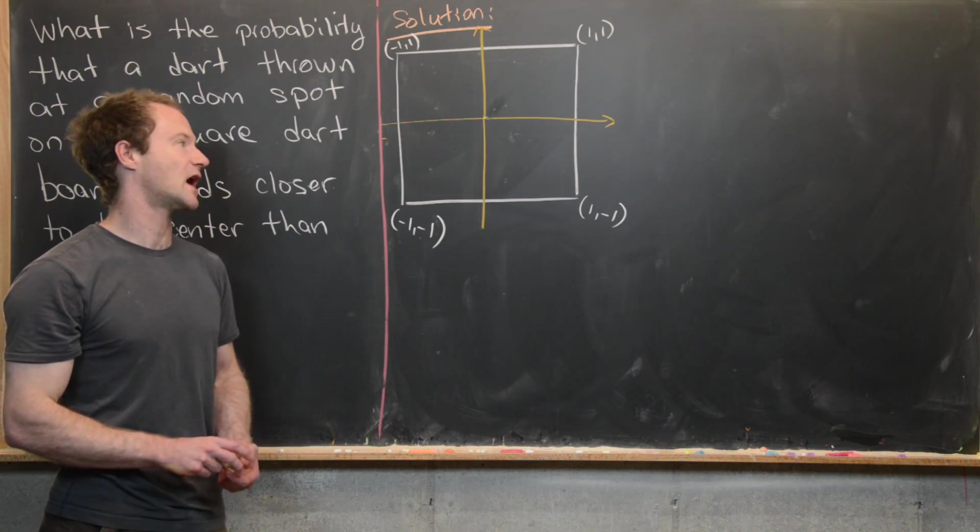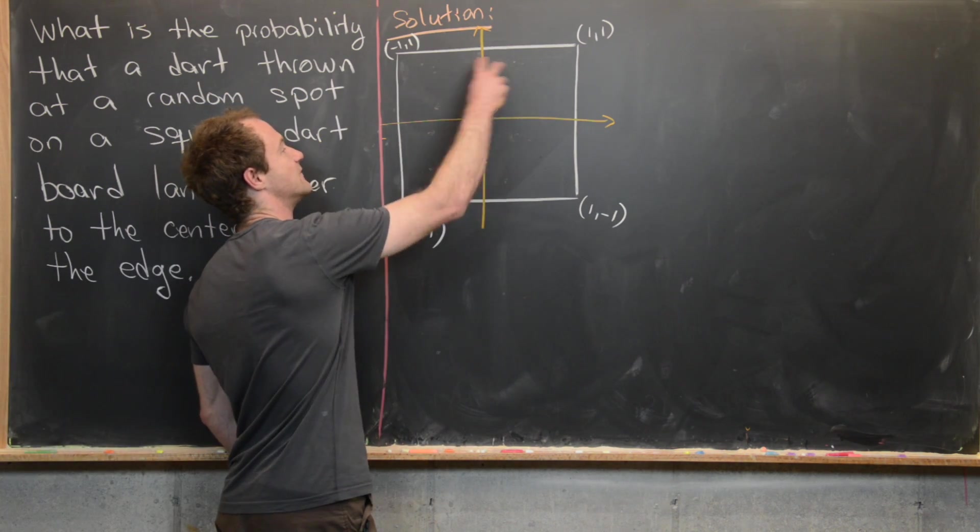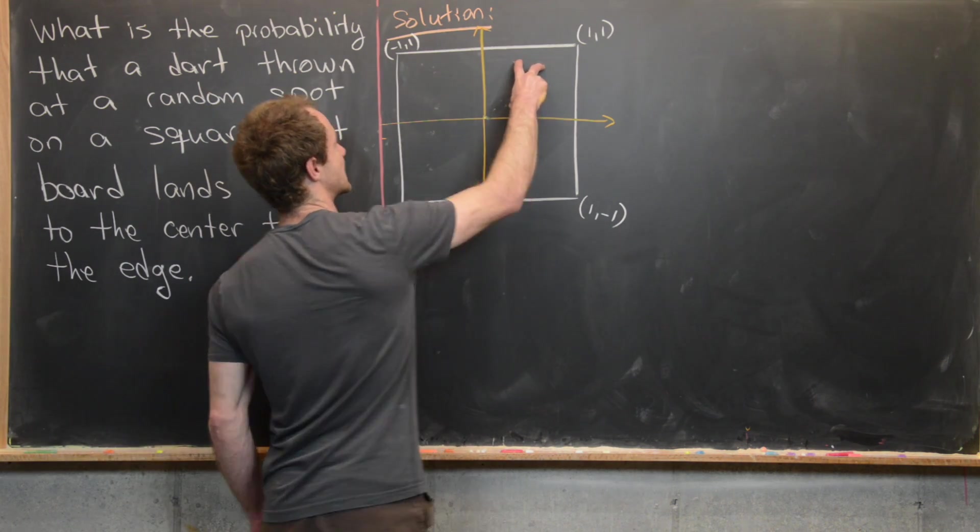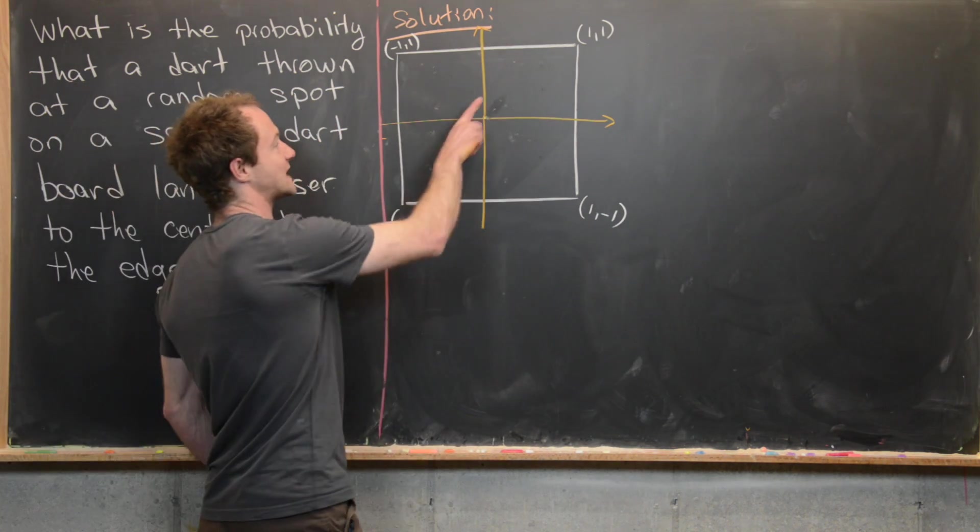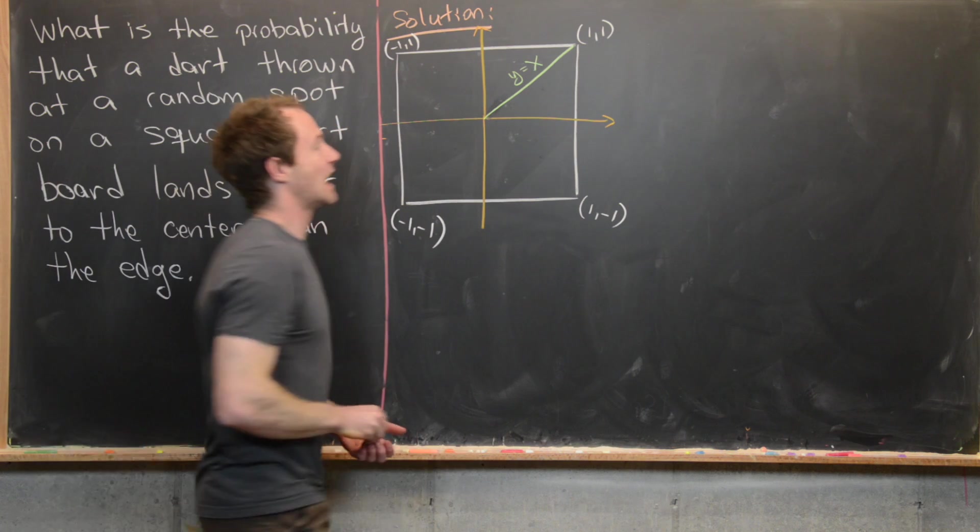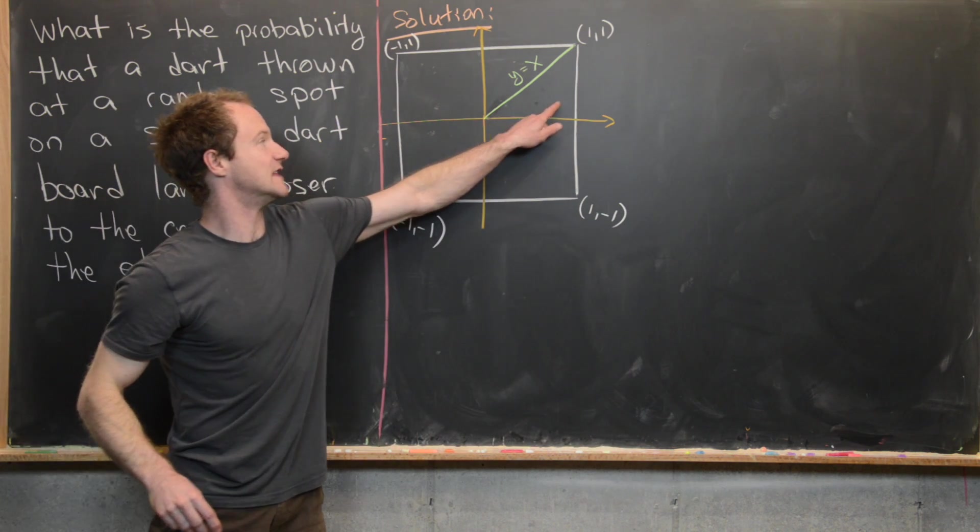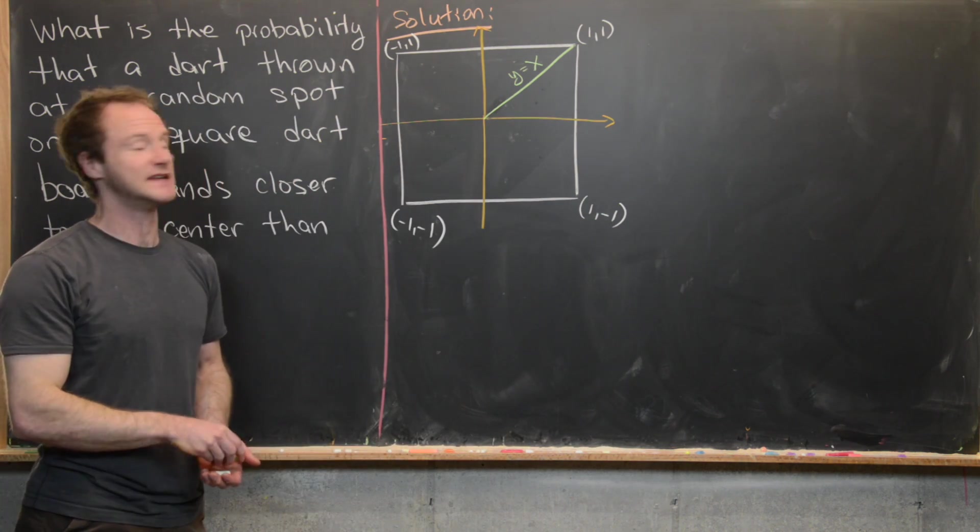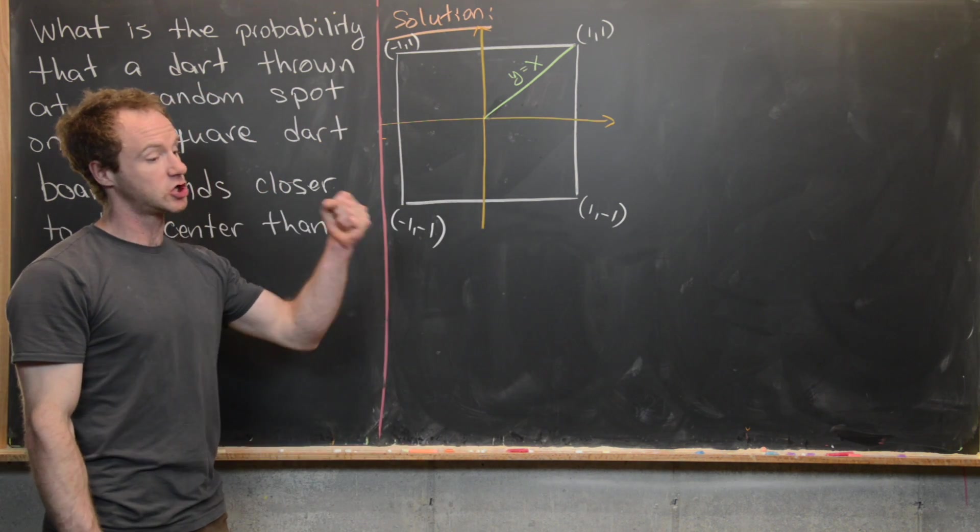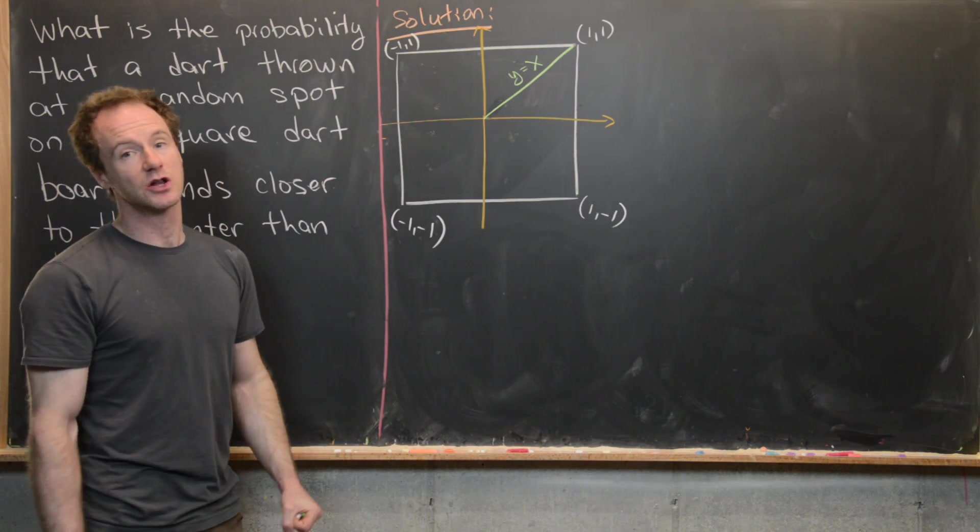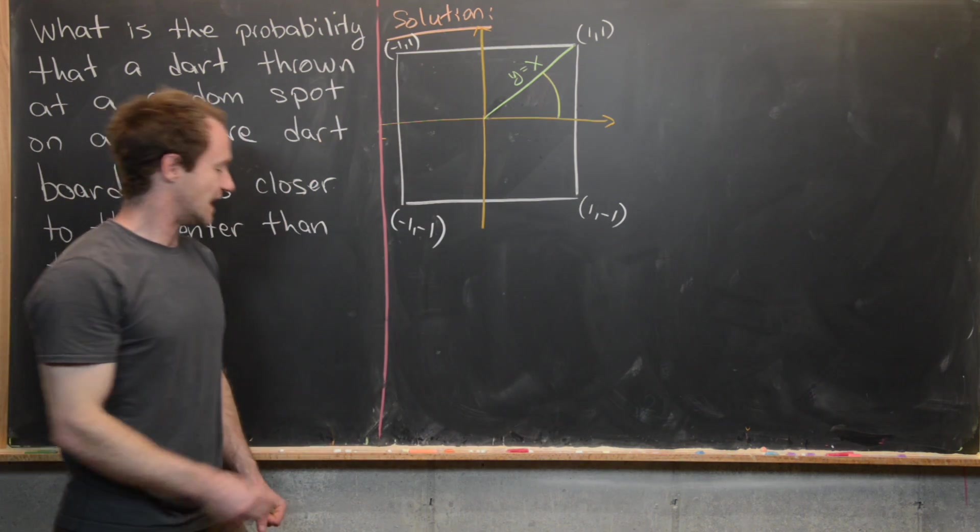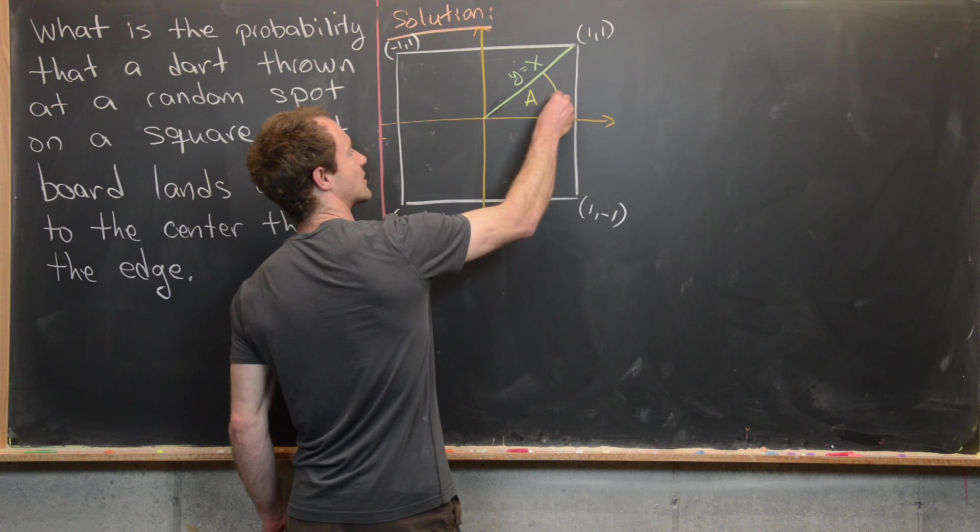Since the dart hits the board at a random spot we know that it's equally likely to land in any of these four quadrants. So we might as well solve the problem only considering the dart landing in this first quadrant. Furthermore we can split this first quadrant in half by looking at the line right here which is y equals x and only consider what happens when the dart lands in this triangle right here which is pretty easy to work with. Finally we'll take this triangle and break it into pieces that are closer to the origin versus pieces that are closer to the edge. And I'm just going to sketch this curve in here. And so let's go ahead and say that this area right here is A.